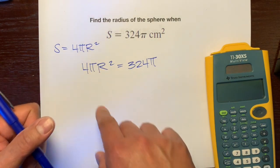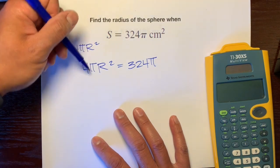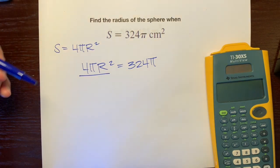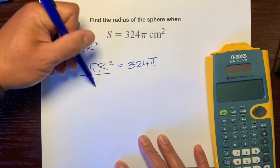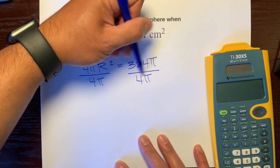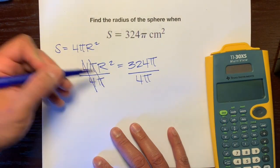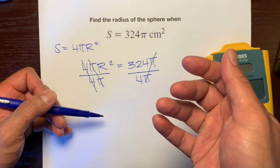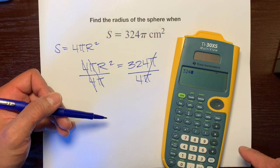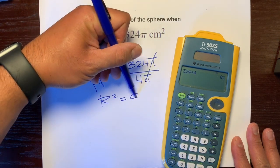Our goal is to get R by itself — to isolate the R. These are all multiplying each other: 4 times pi times R squared. The opposite of multiplication is division. We're going to divide both sides by 4 and by pi. The 4s cancel each other out, the pi's cancel each other out, so all we're left with is 324 divided by 4, which equals 81. So R squared equals 81.